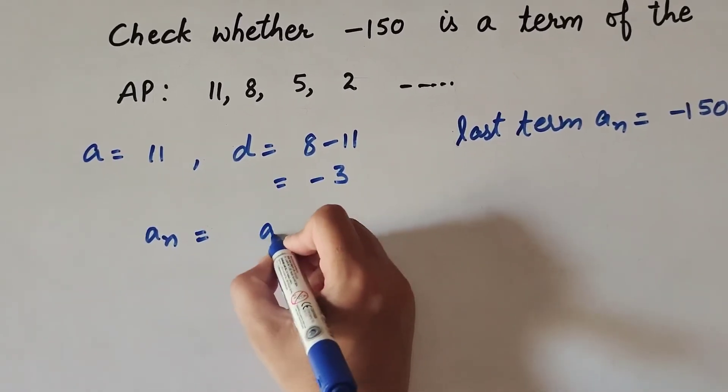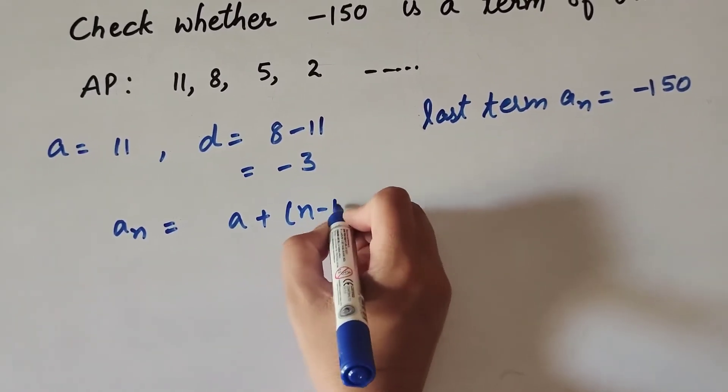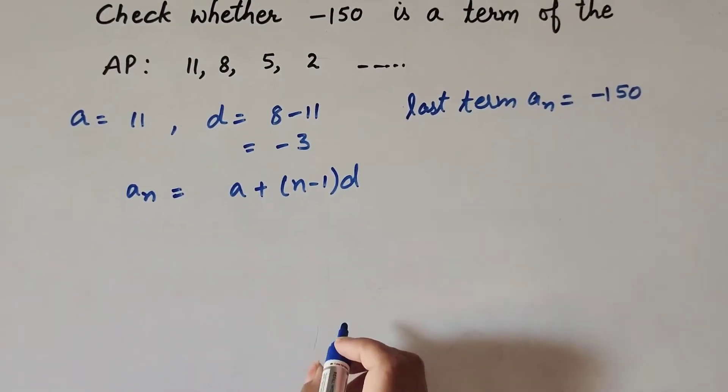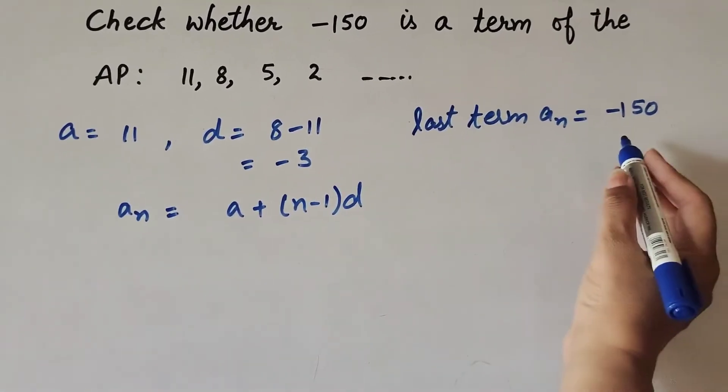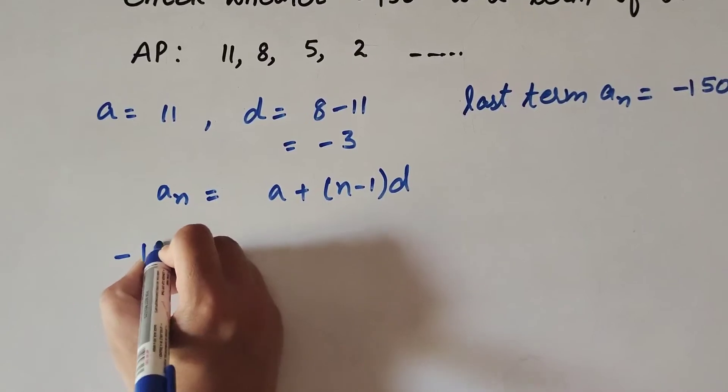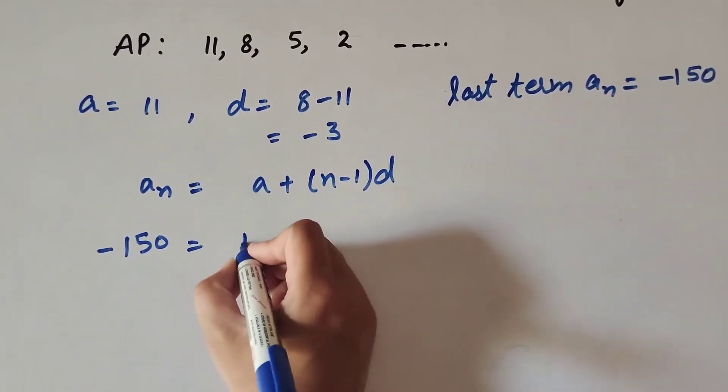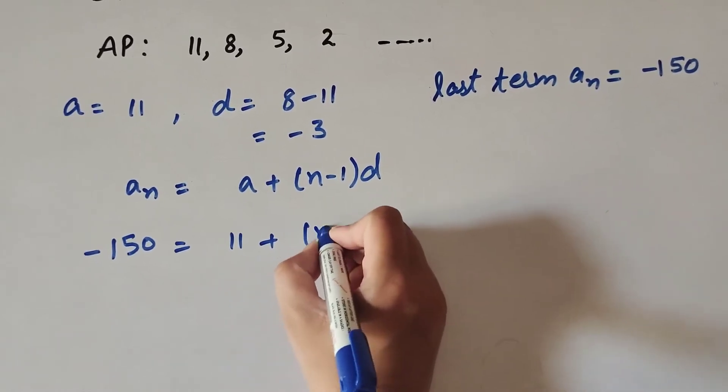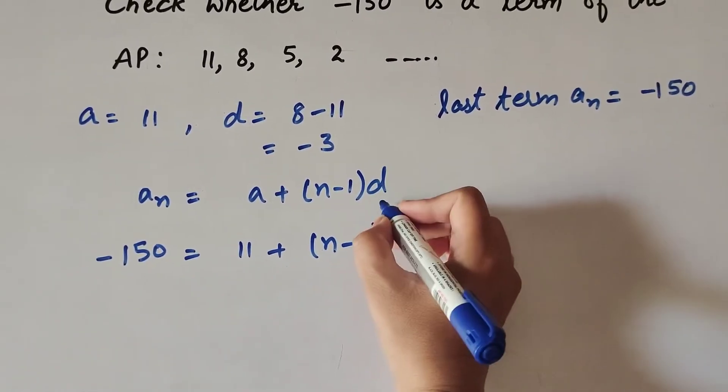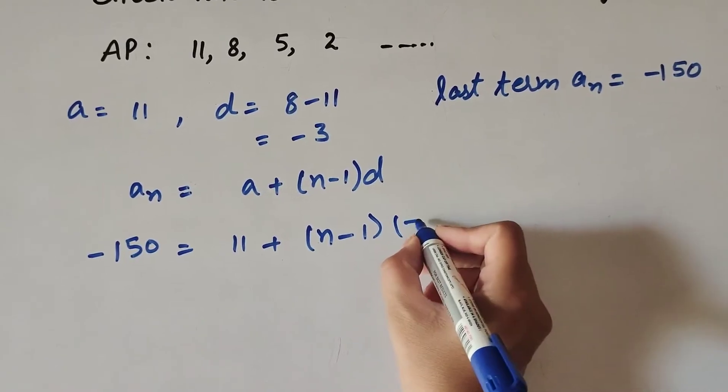The formula is an = a + (n-1)d, where an is the last term. So -150 = 11 + (n-1), and d is the common difference which is -3.